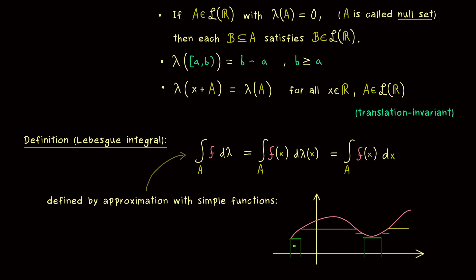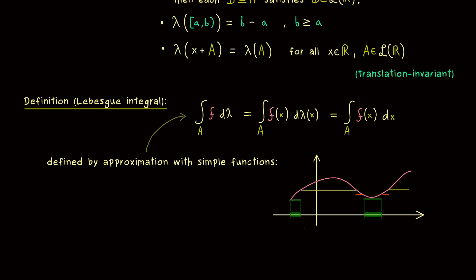So for example for this given value the pre-image consists of these two parts here. And now of this whole set we can calculate the Lebesgue measure. And the number we get out here we can multiply by the value we have here. So what we get are the areas here. Hence in the end when we add up all these numbers, we get an approximation of the area between the x-axis and the graph of the function.